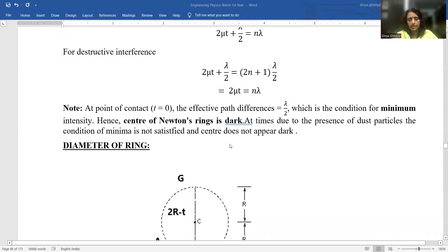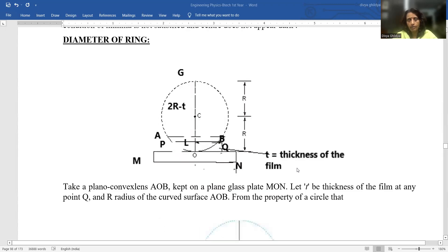The center of Newton ring is always dark because of the minima condition being satisfied out there. Now, today we will derive an expression for the diameter of Newton ring.